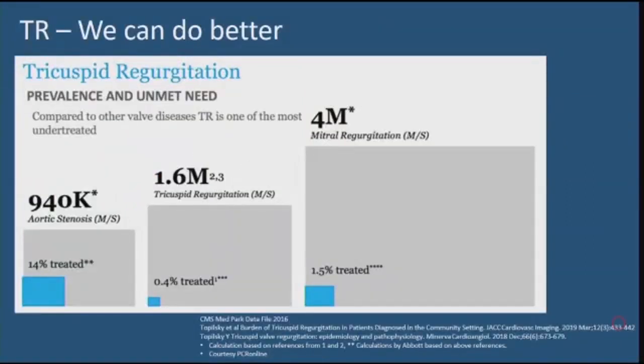Derived from population-based studies and the CMS database, it is estimated that at least 1.6 million people are living with tricuspid regurgitation, and less than 0.5% of them are receiving any therapies.